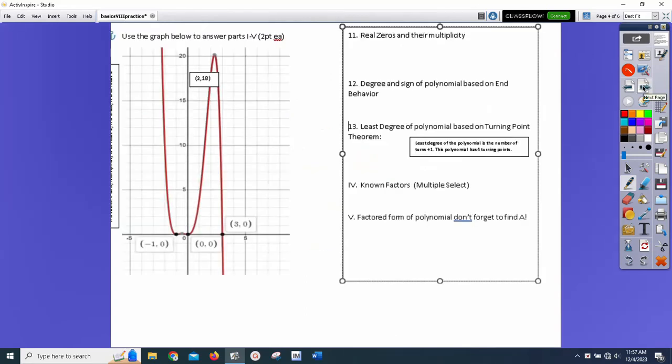All right, this will be fun for you. Use the graph to answer parts one through five, and apparently I need to change that to be 11 through 15. I know the sheet of paper you're looking at has got it typed out better. But anyways, two points apiece. The real zeros and their multiplicity. Now, there's a little box over here that for some reason got cut off. But if you cross x-axis, the multiplicity m is at least 1. If you touch x-axis, the multiplicity m is at least 2. All right?